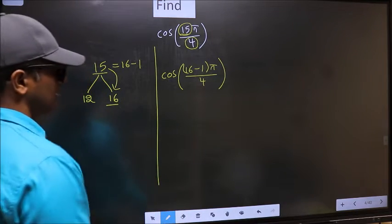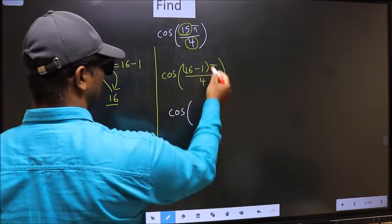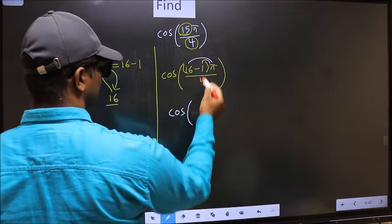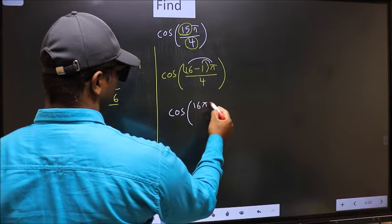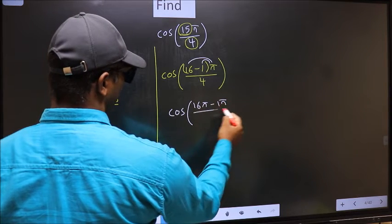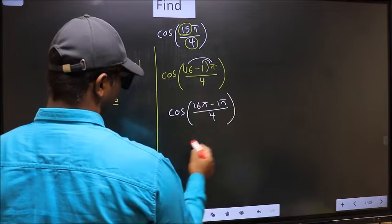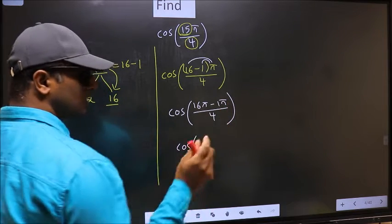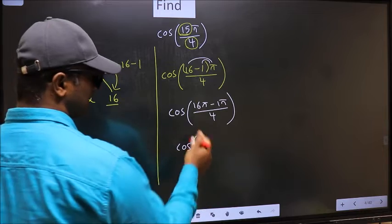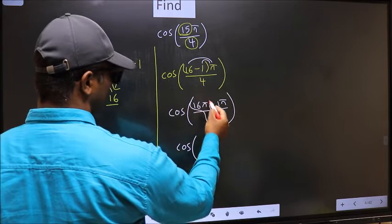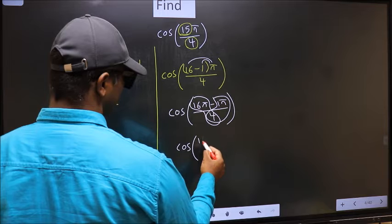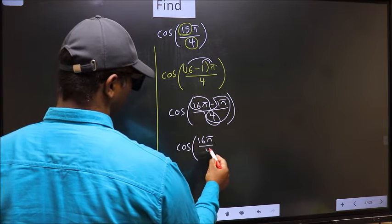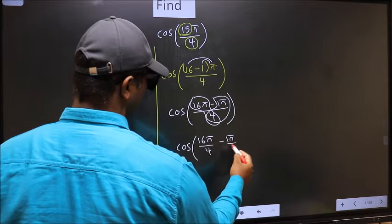Next, cos. Now open up the brackets. You get (16π - 1π)/4. Now split the denominator: that is 16π/4 - 1π/4.